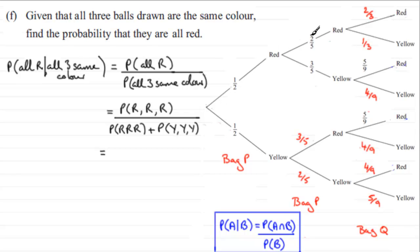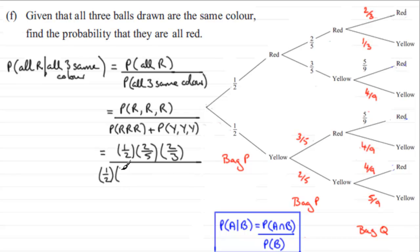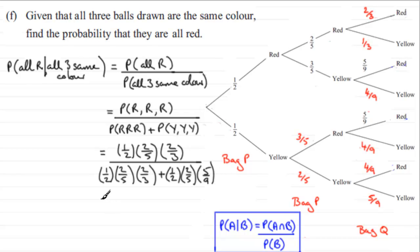Getting red, red, red is ½ × 2/5 × 2/3. That goes in the numerator and also as the first term of the denominator. Then we add the probability of getting three yellows, which is ½ × 2/5 × 5/9. Working this out, the answer is 6/11 — that is the probability that all three are red given that all three are the same color.